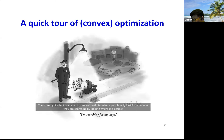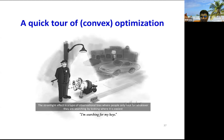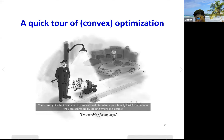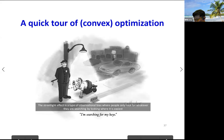We will use the so-called streetlight effect — the idea of looking where we can see rather than where we need to look. We can't really analyze neural networks, which are very complex, but we do know how to analyze convex functions. So that's what we're going to do and hope the intuitions transfer.